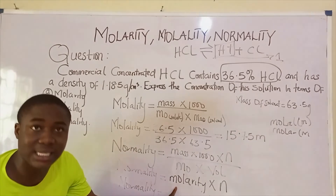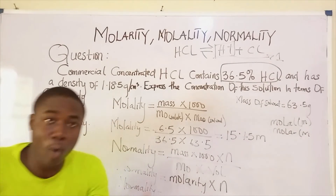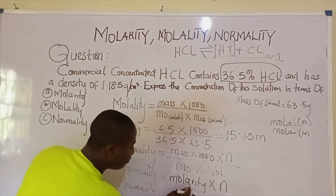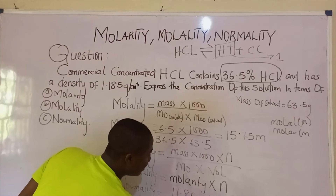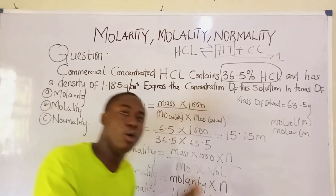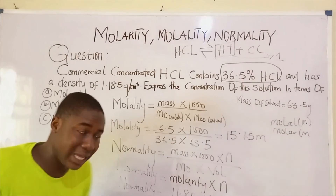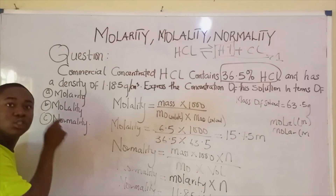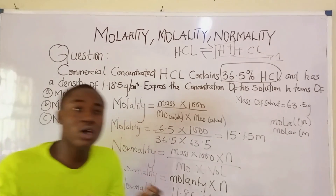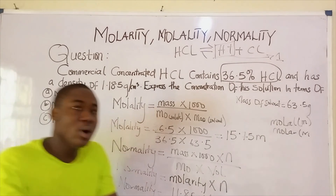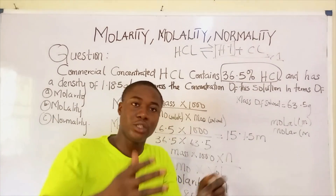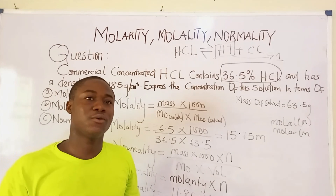We determined the molarity to be 11.85 M, and n = 1 for HCl. So normality = 11.85 × 1 = 11.85 N. For a monobasic compound, molarity equals normality. Watch my previous videos for derivations of these formulas — links are in the description. Share these videos with your friends and subscribe to the channel. Thanks for watching — my name is Bright.